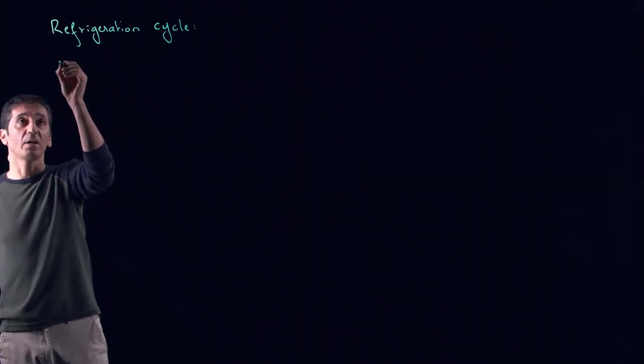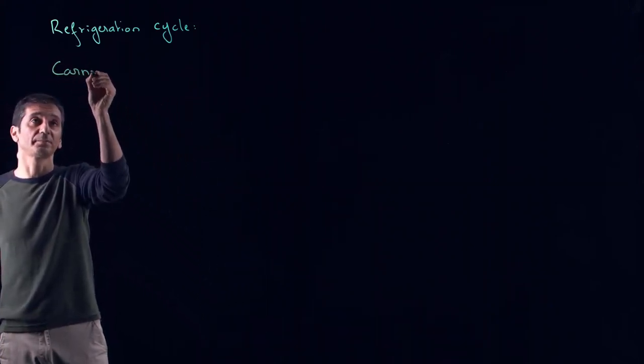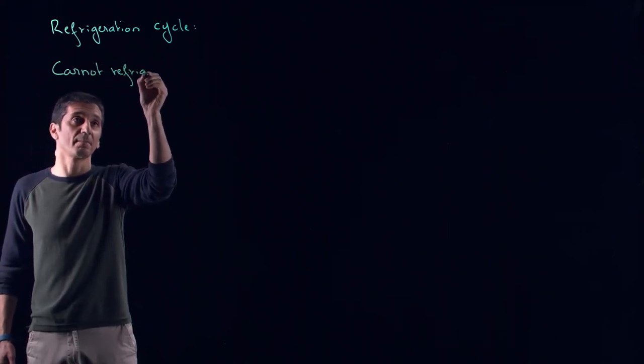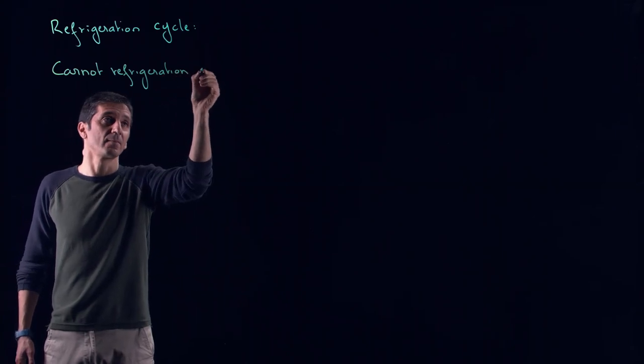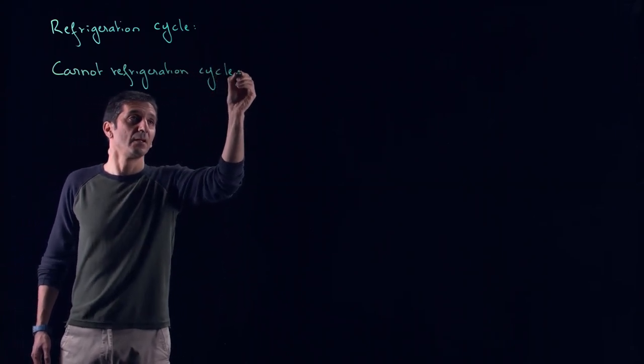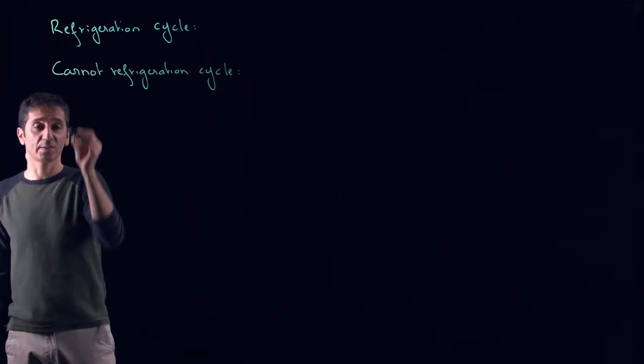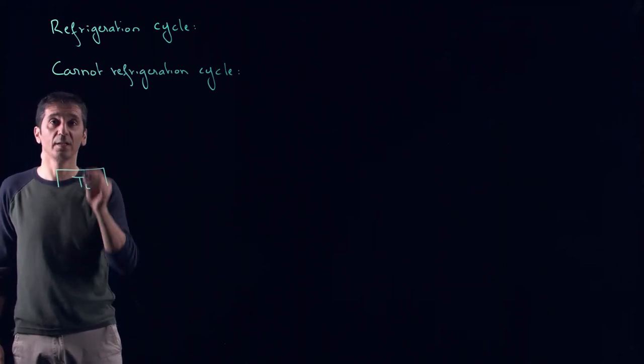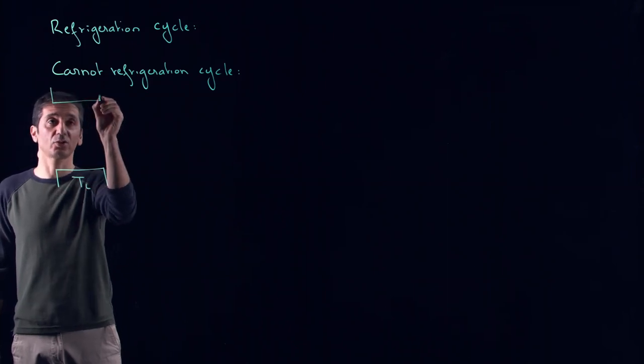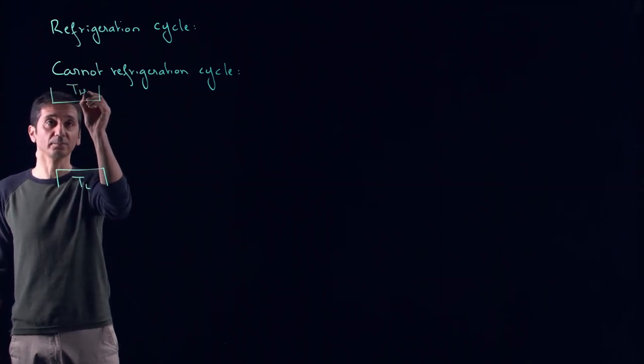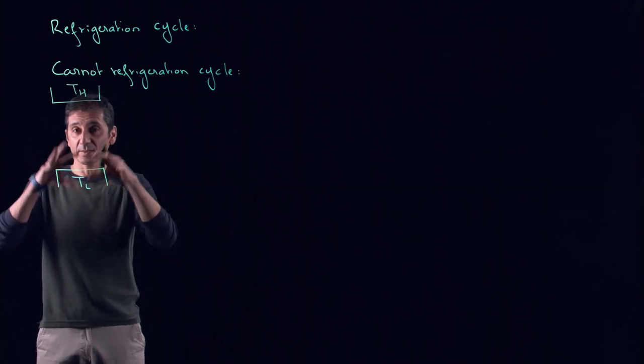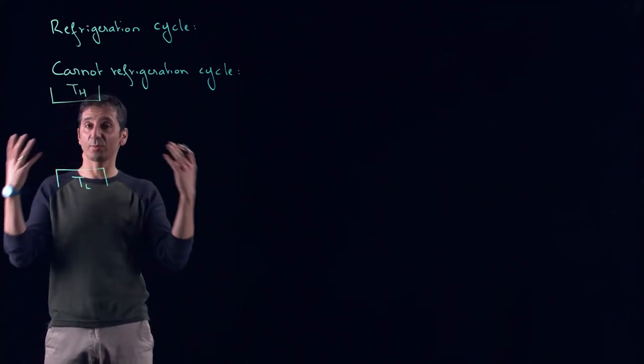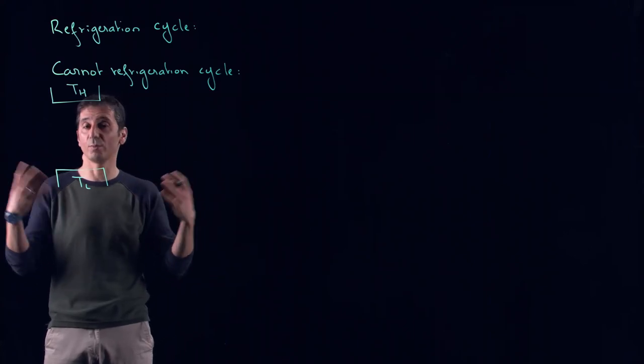If you remember well our Carnot refrigerator, the schematic diagram was: we have a low temperature reservoir and a high temperature reservoir. This will represent, for example, inside the cabinet of your fridge, and TH will represent the surroundings, the kitchen, room, apartment, or whatever.